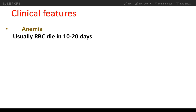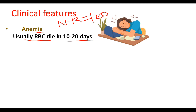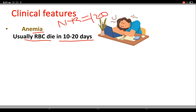Clinical features. Symptoms vary from person to person and change over time. First, anemia — sickle cells break apart easily and die, leaving you without enough RBCs. RBCs usually live about 120 days before they need to be replaced, but sickle cells usually die in 10 to 20 days. Without enough RBCs, your body can't get sufficient oxygen, causing fatigue.